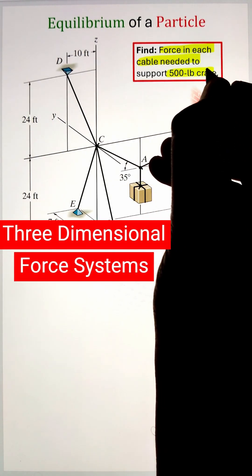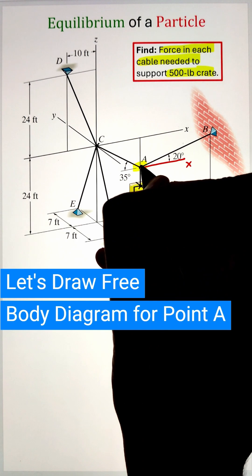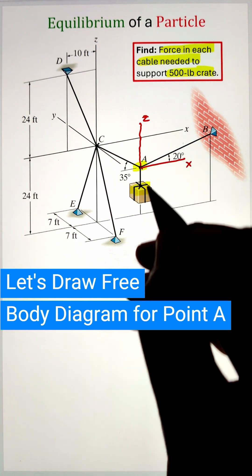In order to find the force in each cable needed to support the 500-pound crate, we can start by drawing our free body diagram for joint A by placing the origin at that particular point. Here, three cables are connected to point A.